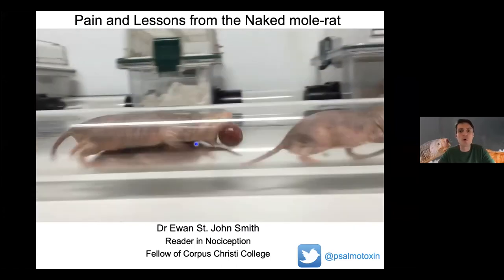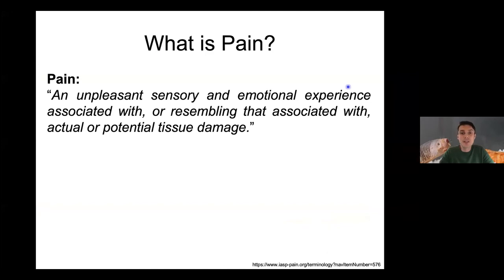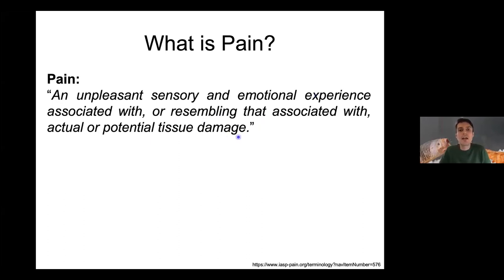Before we can talk about the naked mole rat itself, we need to understand something about pain. Pain is defined as an unpleasant sensory and emotional experience associated with, or resembling that associated with, actual or potential tissue damage. That might sound complex, but pain is complicated — there's the sensory 'ouch' part, but also the emotional part. People living with chronic pain quite often experience anxiety and depression. The definition also accounts for people unable to communicate, or cases like phantom limb pain, where there's no actual damage but pain is still reported.